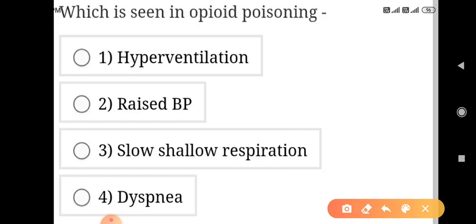Which is seen in opioid poisoning? In opioid poisoning we see slow shallow respiration.